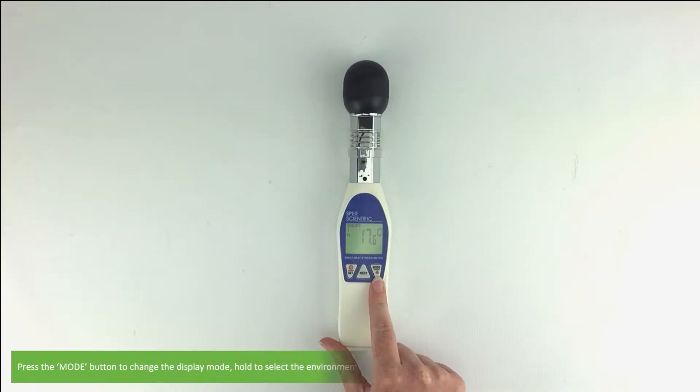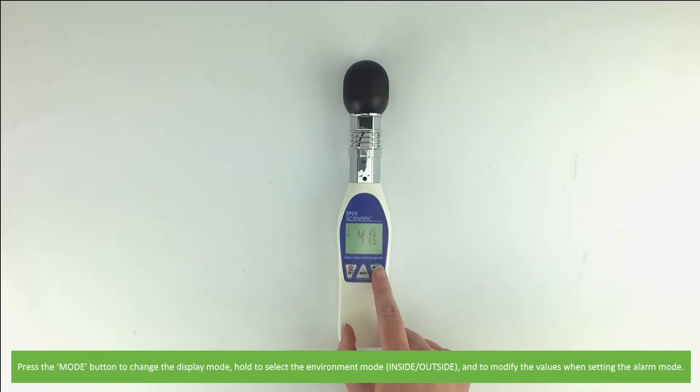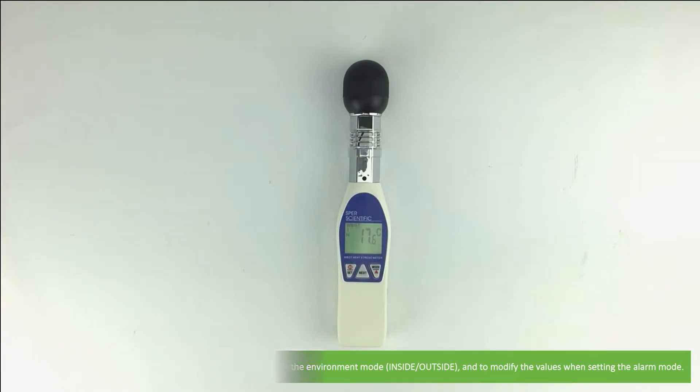Press the MODE button to change the display mode. Hold to select the environmental mode between inside and outside, and to modify the values when setting the alarm mode.